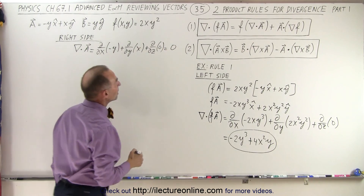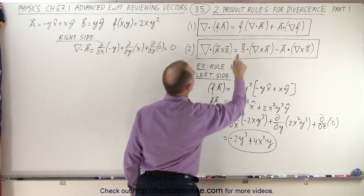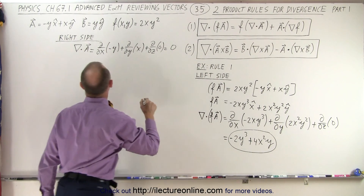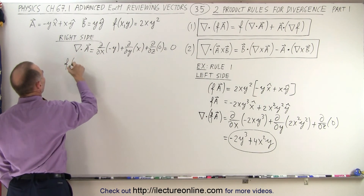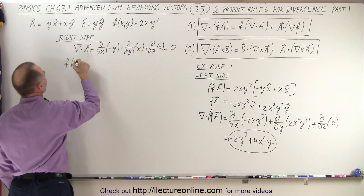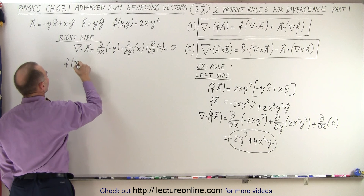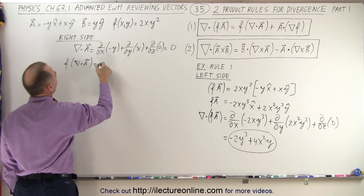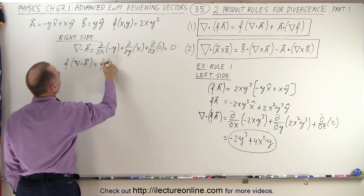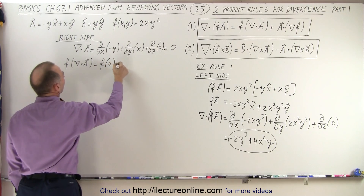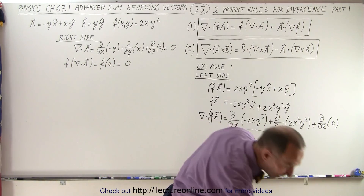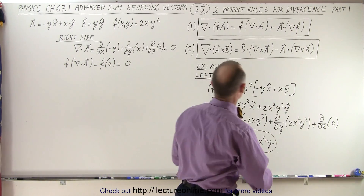When we multiply that times the function — f times the divergence of A — that's going to be equal to the function times 0, which is equal to 0. So the first part of the right side is equal to 0.